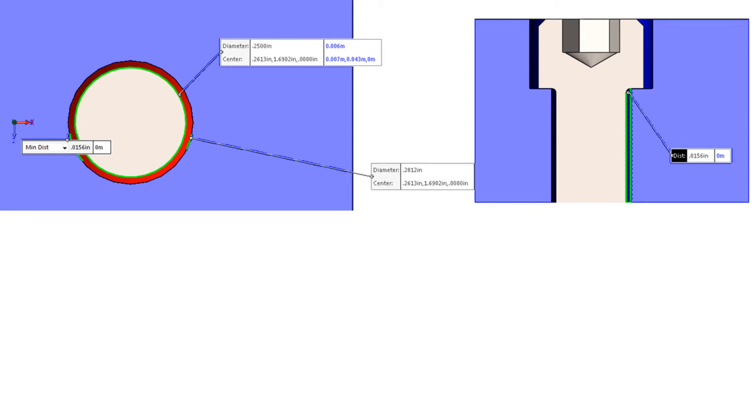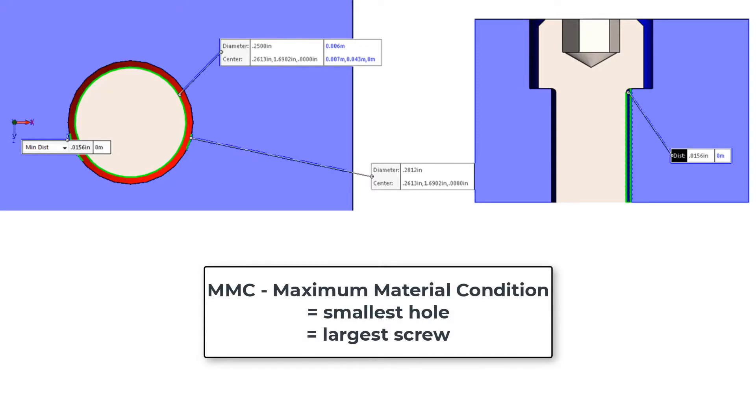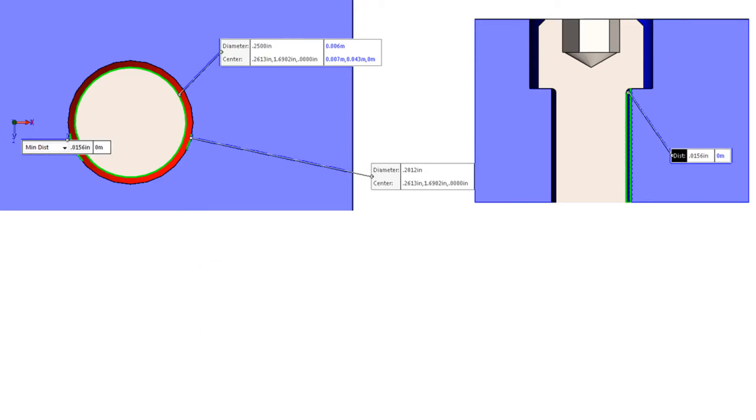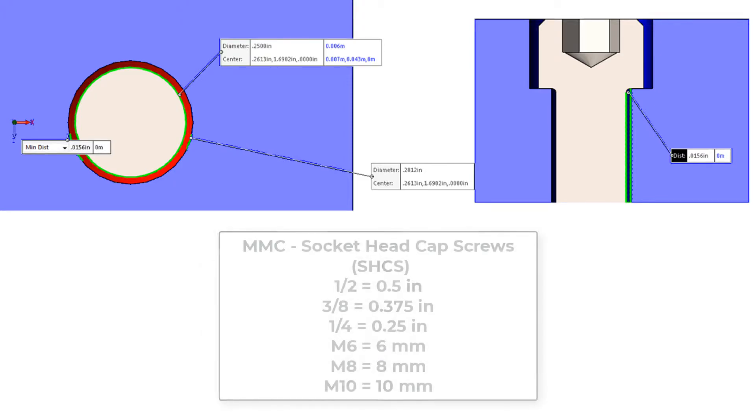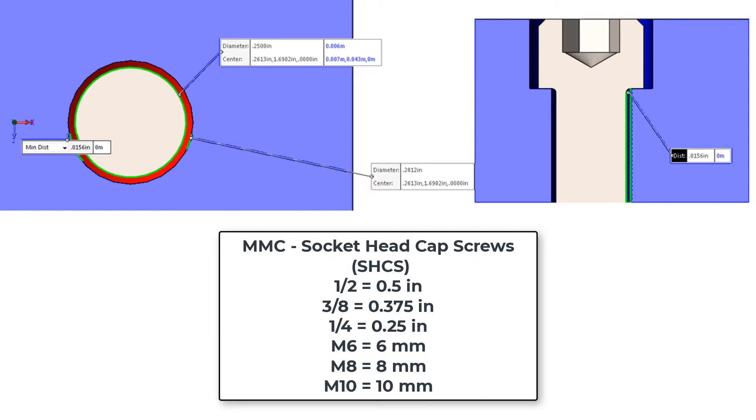When calculating the positional error allowed for a screw hole, the maximum material condition is used. The maximum material condition for the hole will be the drill size called for, as the drill cannot drill smaller than its diameter. For the fastener it will be the nominal size, in this case 0.25. For a half inch screw the MMC is 0.5, and for an M8 bolt it's 8 millimeters.